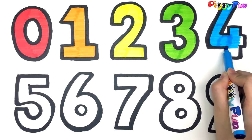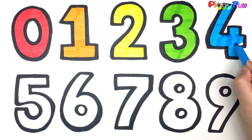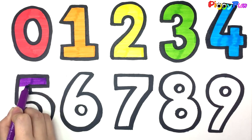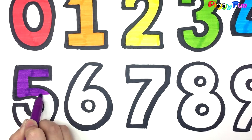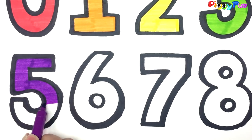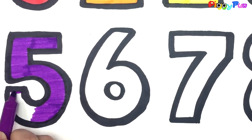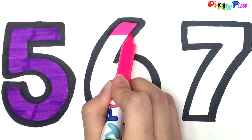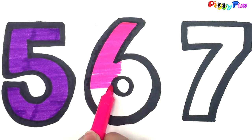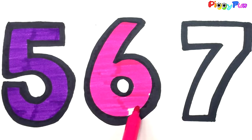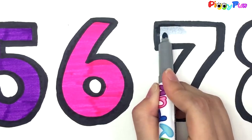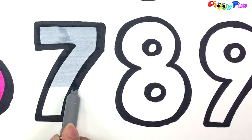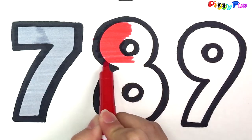E-I-E-I-O, and on his farm he had some sheep, E-I-E-I-O, with a here and a there, here and a there, everywhere, old MacDonald had a farm, E-I-E-I-O. Red, Red.